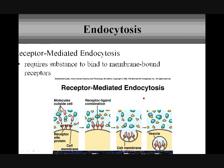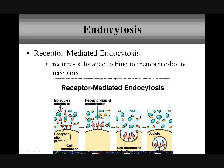Then we have receptor-mediated endocytosis. This is a very similar idea to pinocytosis and phagocytosis, but the difference is that you have receptors that control the endocytosis because only specific molecules will fit within that receptor site. Once they fit into that receptor site, the vesicle can begin to form — we're not just forming a vesicle around whatever wants to come in; it's specific to molecules that fit the receptor. Typically it will then join a lysosome for breakdown.